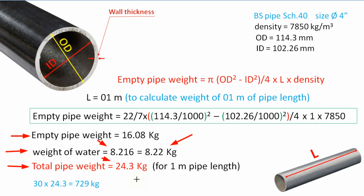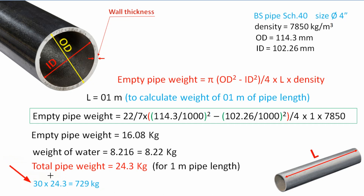This is the total weight for 1 meter length of the pipe. If you have a different pipe length than 1 meter, then you need to multiply that length by the weight calculated for 1 meter. For example, suppose we have a carbon steel pipe, 4 inch schedule 40, having a length of 30 meters. We already calculated the total weight for 1 meter which is 24.3 kg, so we multiply 30 by 24.3 to get the total weight of this 30 meter pipe.